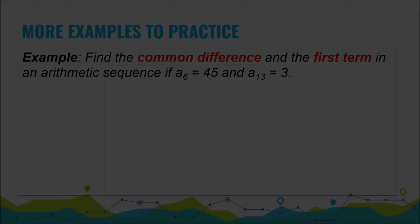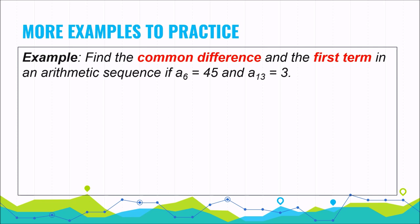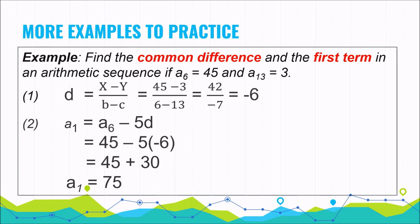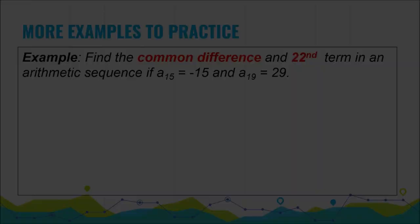Another example: find the common difference and the first term if a sub 6 equals 45 and a sub 13 equals 3. Pause the video and check your answer later. The answers are: the common difference is negative 6 and the first term is 75. Did you get the answer correctly? Well done, and for others, go back and try to figure out your mistake — you can do it.